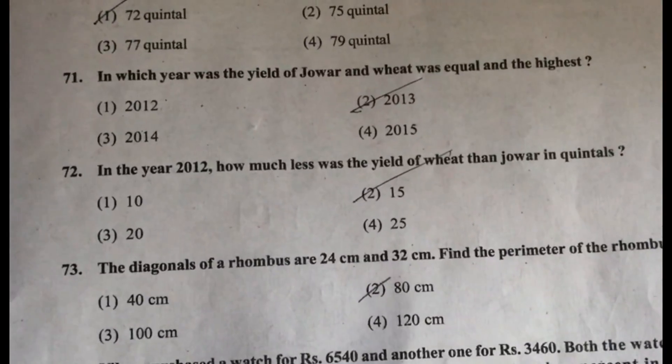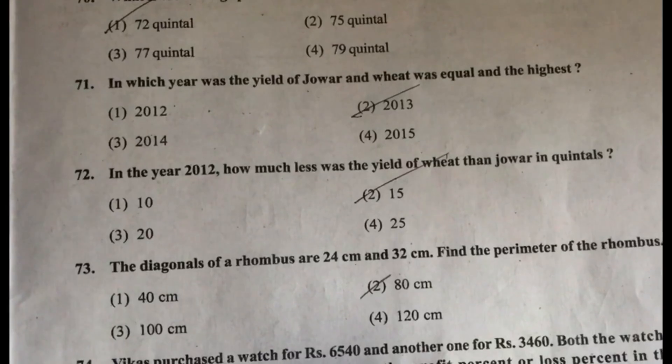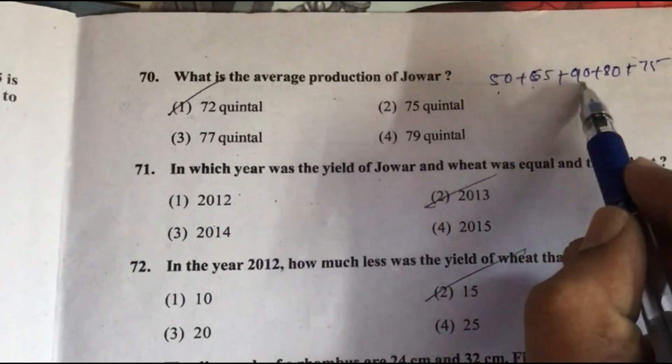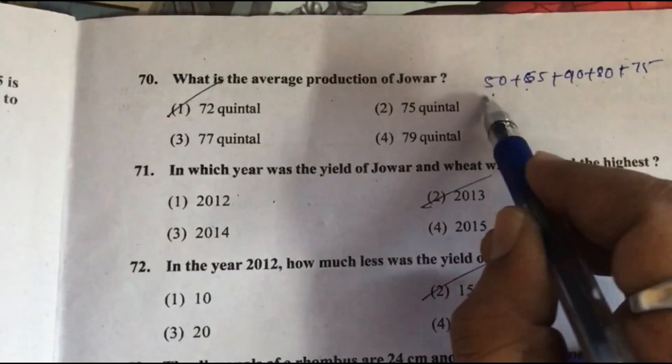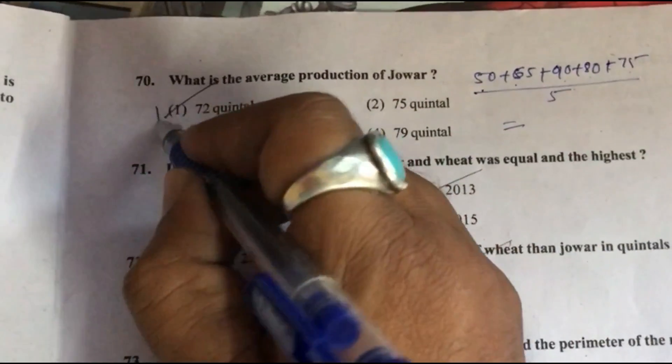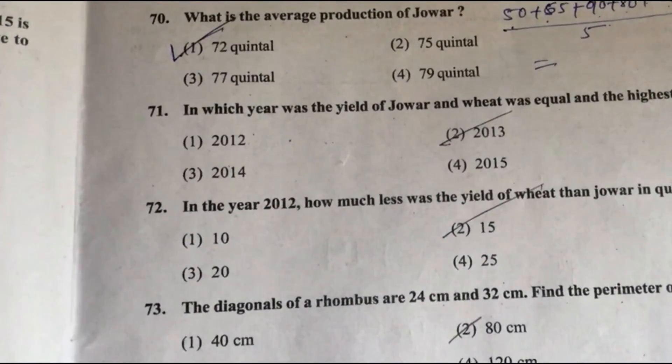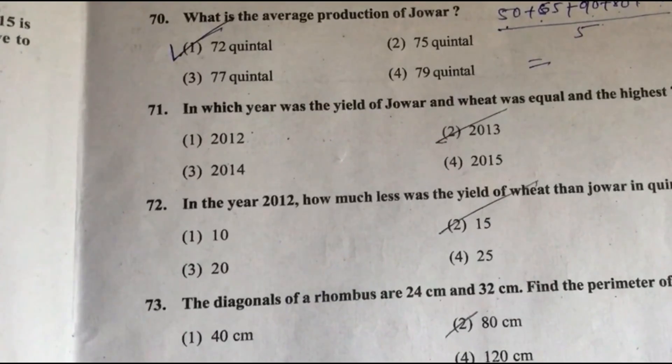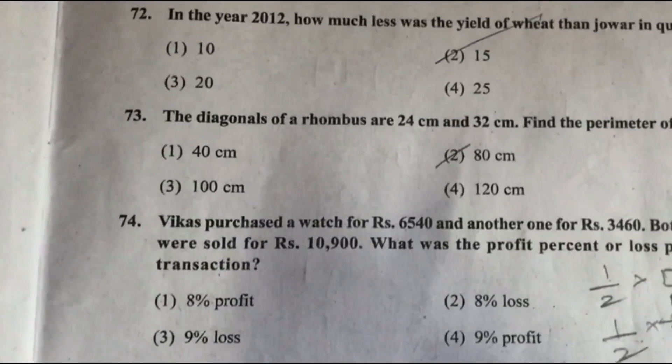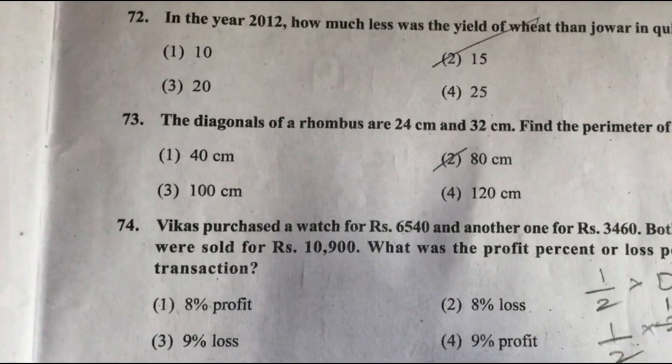Question 70: What is the average production of Jowar? From the graph, we can see the production of Jowar for different years. Production for different years is 50, 65, 90, 80, 75. So we have to find average. Add and divide by 5, we will get 72 quintals, option 1 as the answer. Question 71: In which year was the yield of Jowar and wheat equal to the highest? In the year 2013. Question 72: In the year 2012, how much less was the yield of wheat than Jowar in quintals? 15 less.